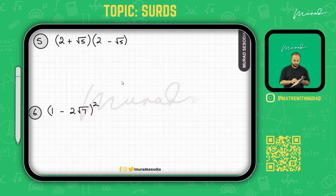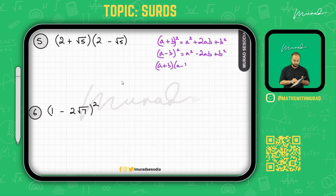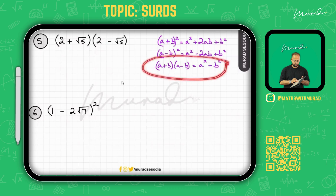Before doing the next examples, recall these algebraic identities: (a + b)² = a² + 2ab + b²; (a - b)² = a² - 2ab + b²; and (a + b)(a - b) = a² - b². In the upcoming example, we can identify that it relates to the identity (a + b)(a - b), where a = 2 and b = √5.